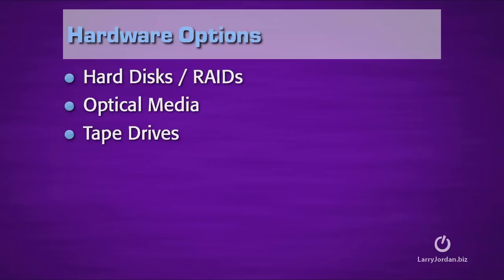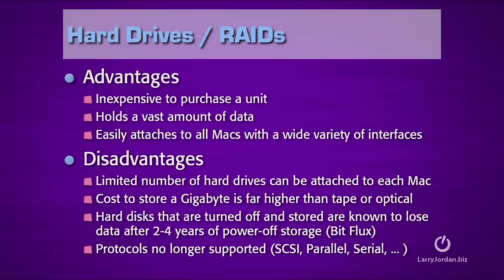I want to talk about the hardware options that we have: hard disks and RAIDs, optical media, and tape drives. The advantages to hard drives and RAIDs are that they're inexpensive to purchase, they hold a vast amount of data, and they easily attach to all Macintoshes using a wide variety of connections — everything from USB up to eSATA and miniSAS. But one disadvantage of hard drives is that there's a limited number that can be attached simultaneously to each Mac.